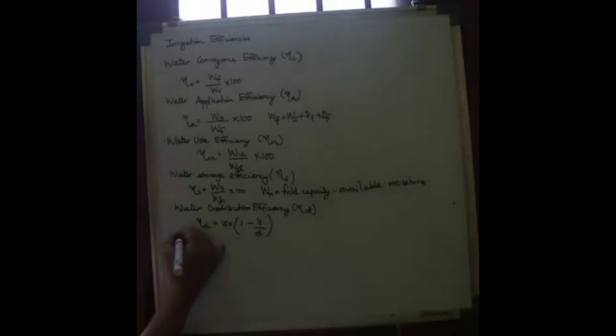Next is Consumptive Use Efficiency, Eta Cu. Eta Cu is equal to WCu by WD into 100. Where WD is the net amount of water depleted from the root zone, and WCu is the normal consumptive use of water. So WCu divided by WD into 100 gives you Consumptive Use Efficiency, Eta Cu.